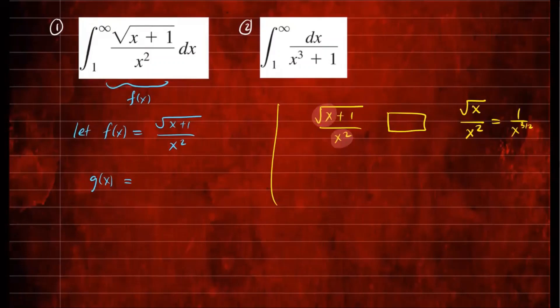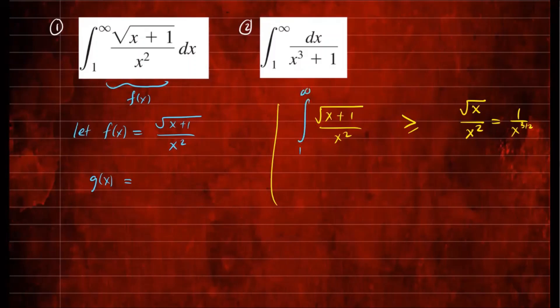Now, what inequality would you put here? For f(x), the denominator is greater, and for g the denominator is smaller, but the numerator is the same. So f will be greater than or equal to g. That's the inequality. Direct comparison doesn't help here, because if you integrate both from 1 to infinity, we know that g converges, but f lies above it — g lies below the one we're looking at. So direct comparison doesn't help, and we have to go with limit comparison.